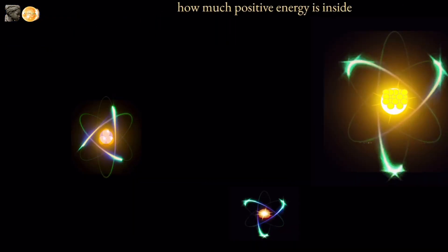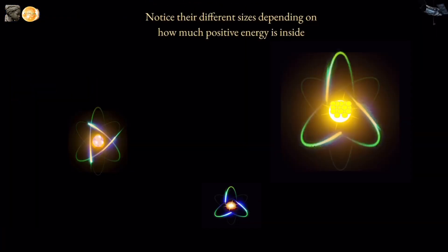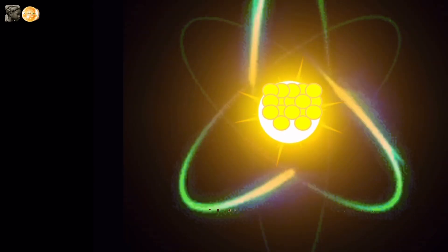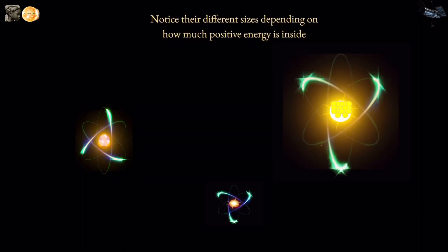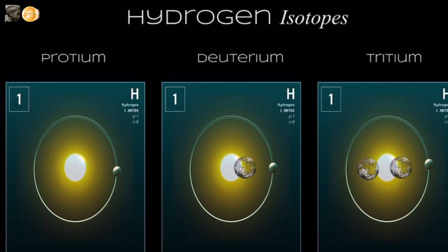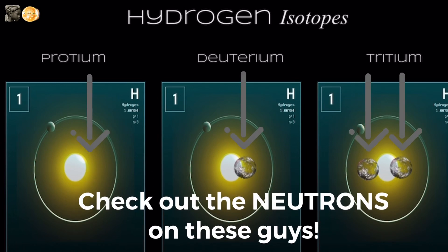Last time we asked what makes atoms so vastly different from each other and found out it's all in their atomic number, or amount of positive energy in its core nucleus. Today we're going to look at the amount of neutral energy inside each atom.